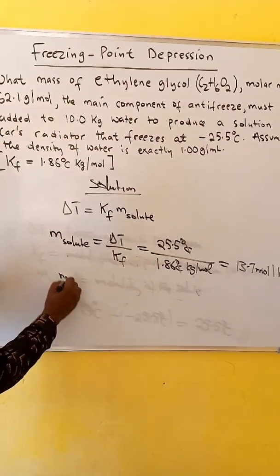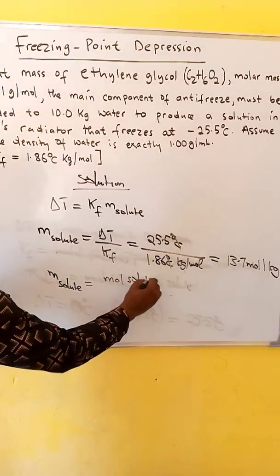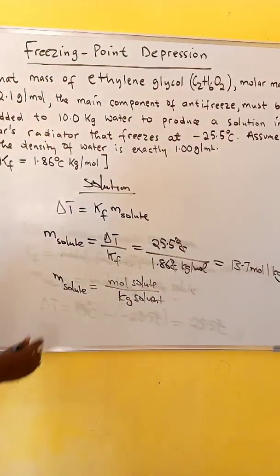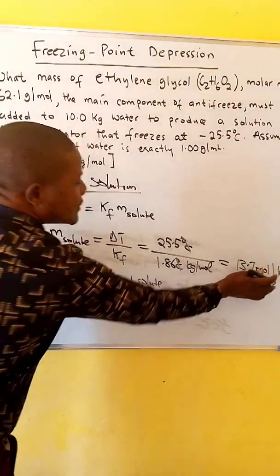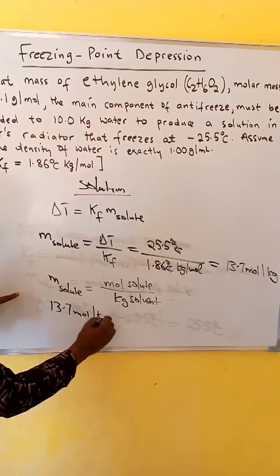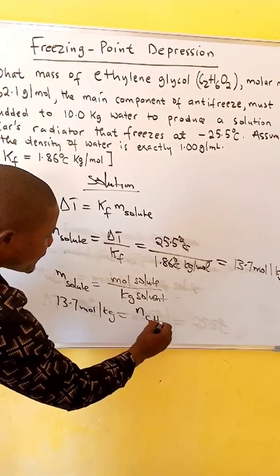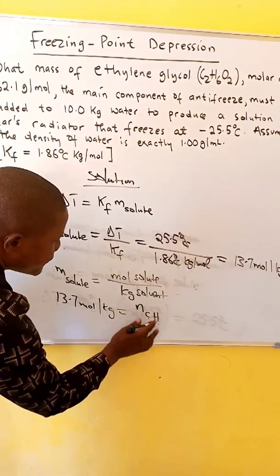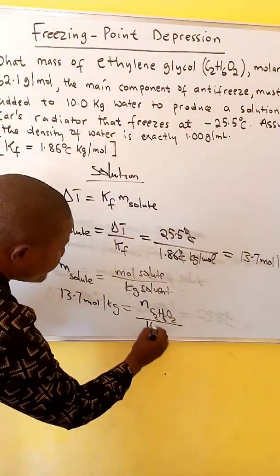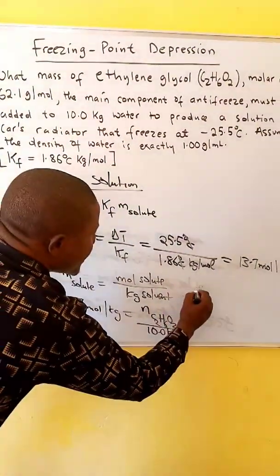We know that molality of the solute is equal to mole solute over kg solvent. In this case, our molality is 13.7 mole per kg, which is equal to mole solute, moles of ethylene glycol, over kg of solution, we have 10.0 kgs of water.